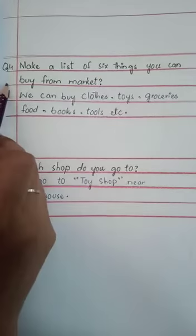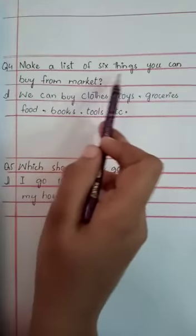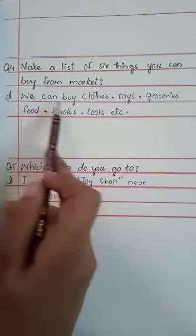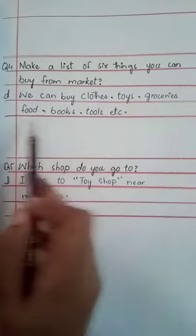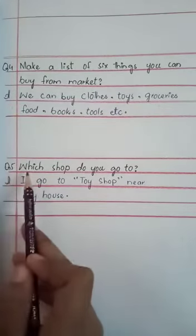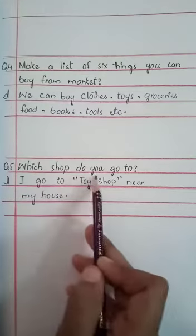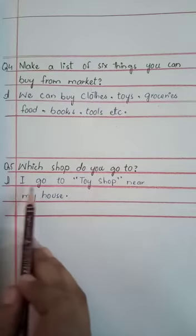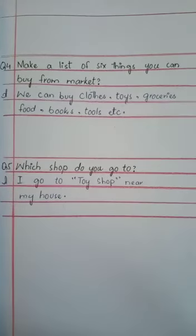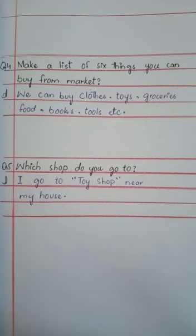Question number 4 is: make a list of 6 things you can buy from the market. Answer: we can buy clothes, toys, groceries, food, books, tools, etc. Question number 5 is: which shop do you go to? Answer: I go to a toy shop near my house. Do all work in your folder with neat and clean writing. Hope you all understood today's video. I will come back with another video. Till then, Allah Hafiz.